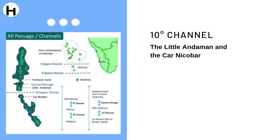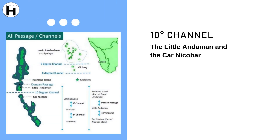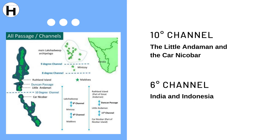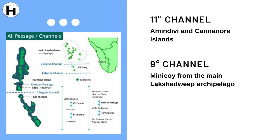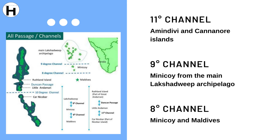In conclusion, the 10-degree channel separates Little Andaman and Car Nicobar. The 6-degree channel separates India and Indonesia. The 11-degree channel separates the Amindivi and Cannanore Islands. The 9-degree channel separates Minicoy from the main Lakshadweep Archipelago, and the 8-degree channel separates Minicoy and the Maldives.